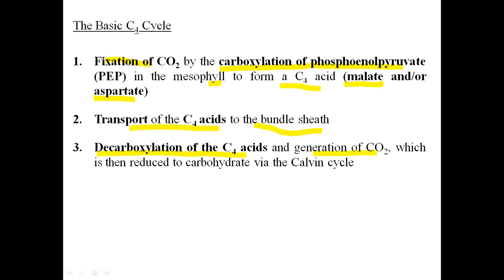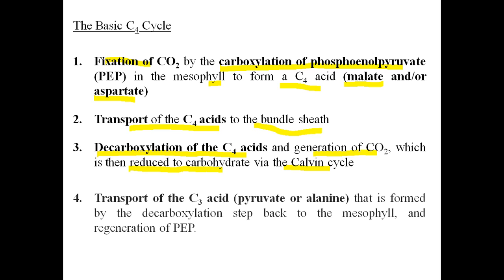Step three is decarboxylation of the C4 acid in the bundle sheath cells, where carbon dioxide is released and enters the Calvin cycle, where it is reduced to carbohydrate. The resulting C3 acid is transported back to the mesophyll cells in the form of pyruvate or alanine, where it regenerates phosphoenol pyruvate.